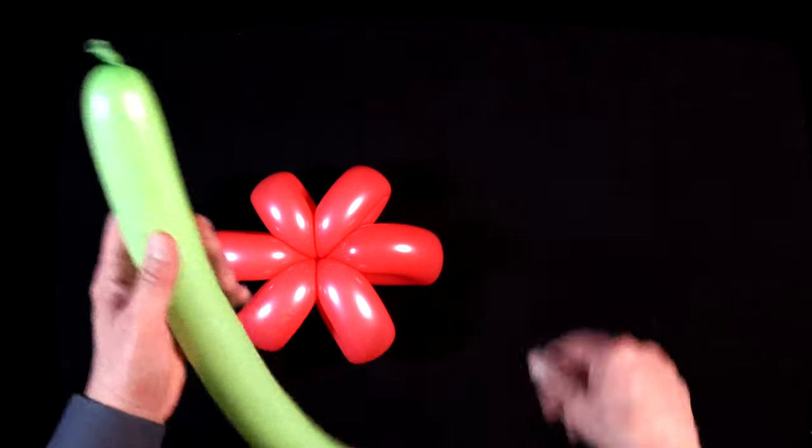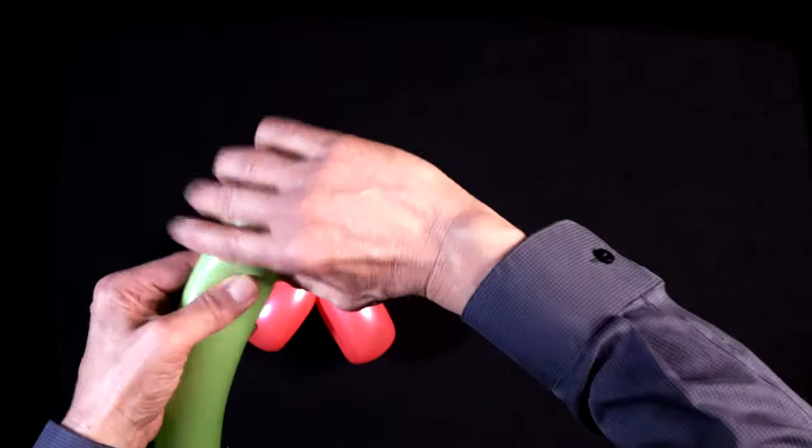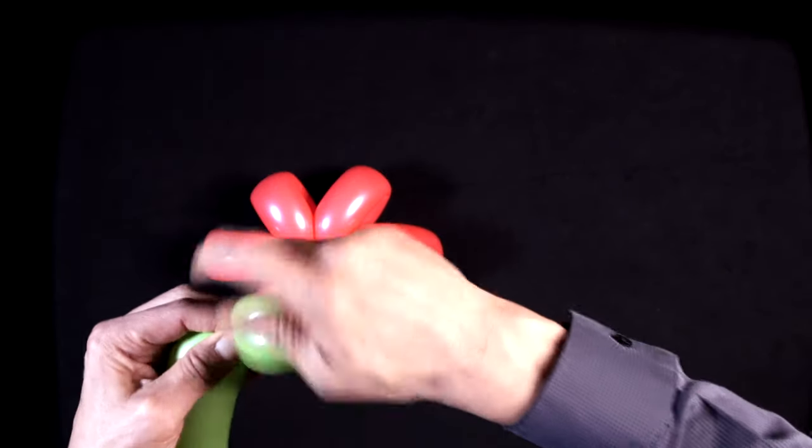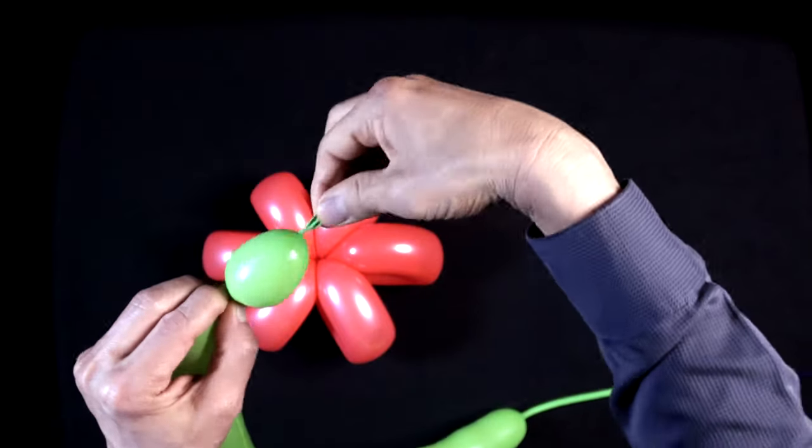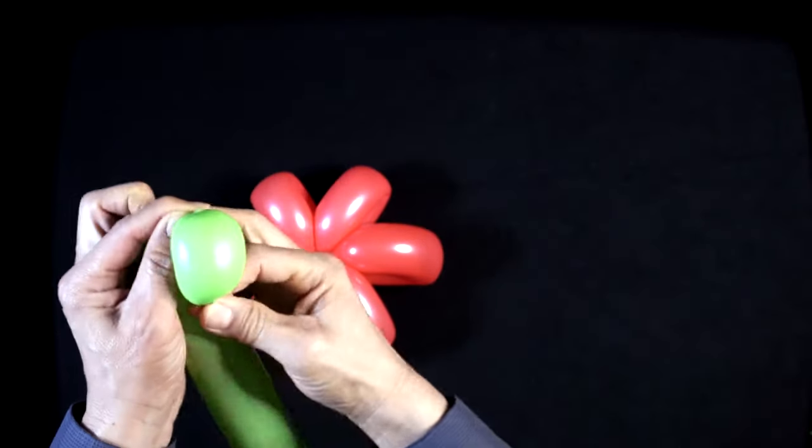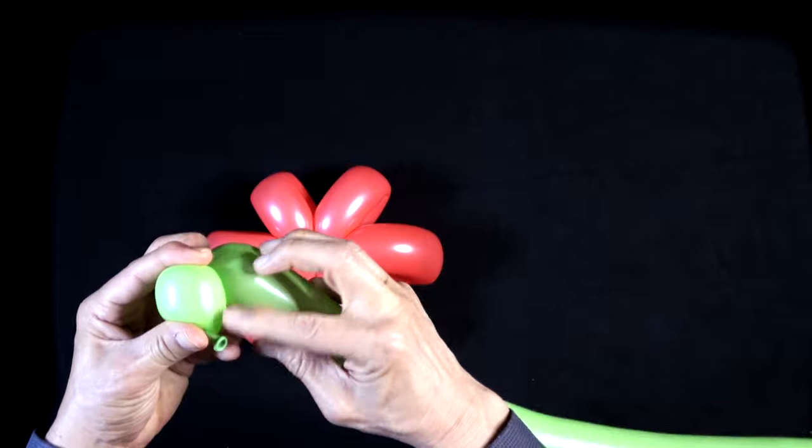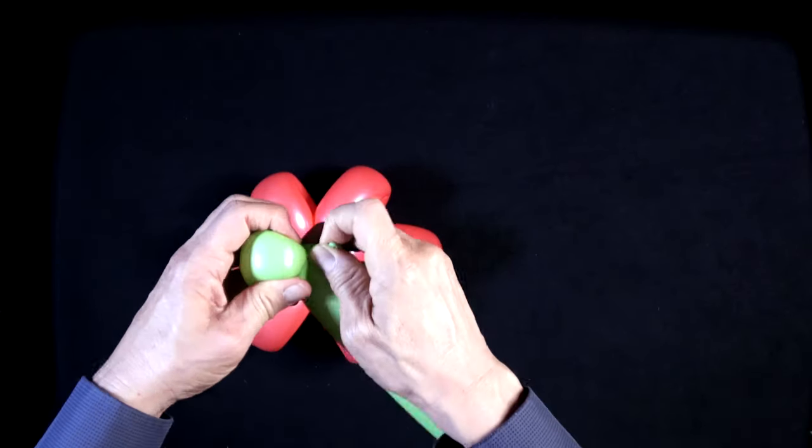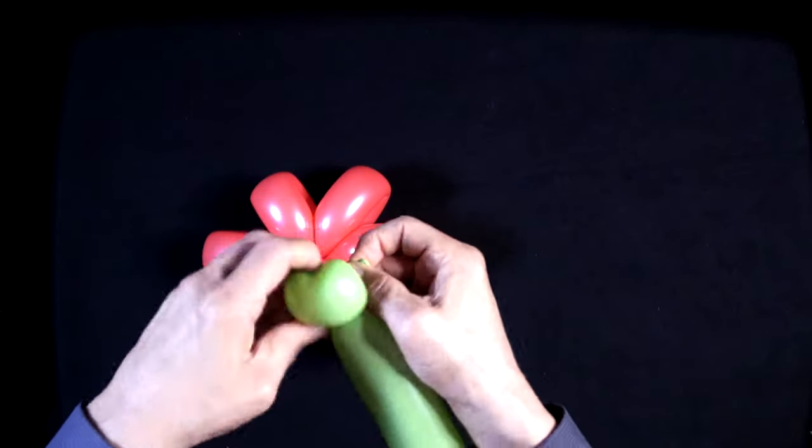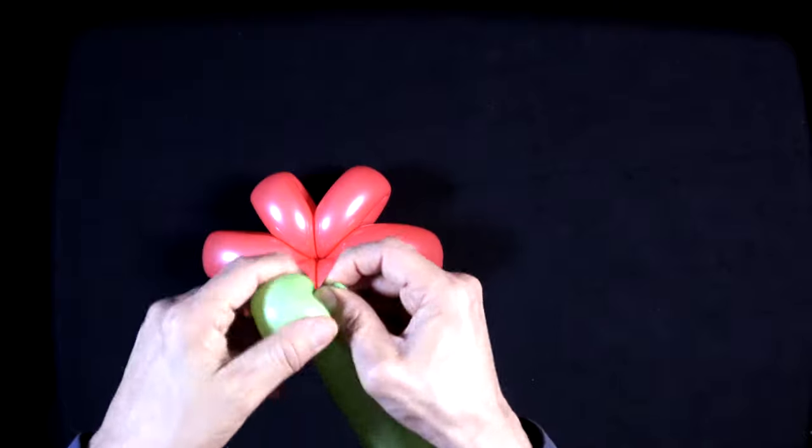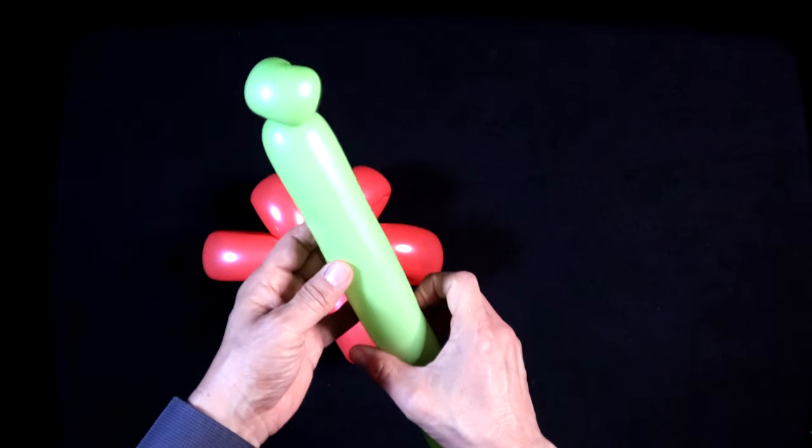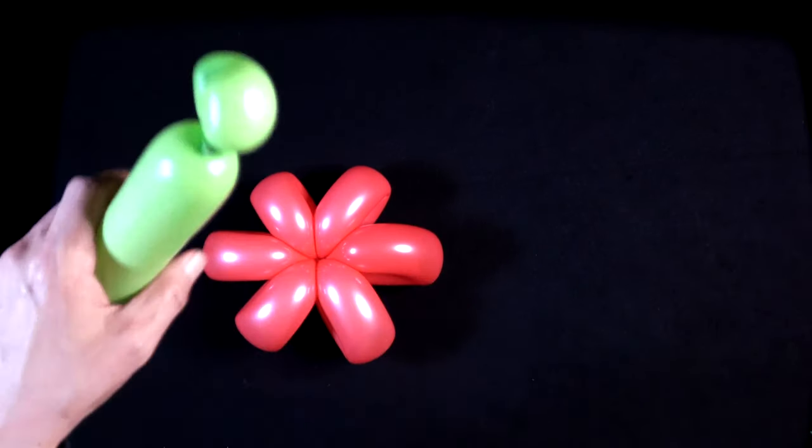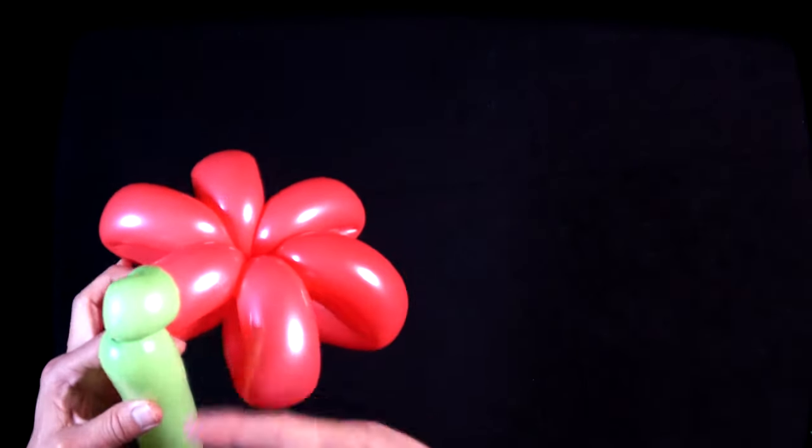Take your second balloon and make a basic twist. Now, if you like, you can leave it a basic twist. I think it looks better when it's a pinch twist, so we're going to take the nozzle and fold it in, and the nozzle is going to be twisted into here. There we have a stem.